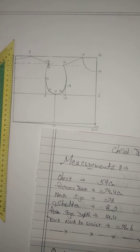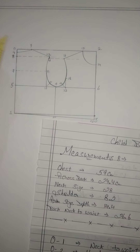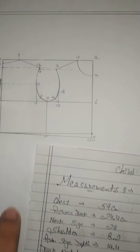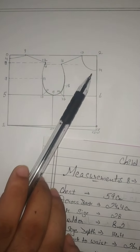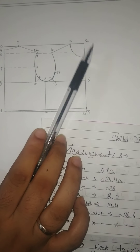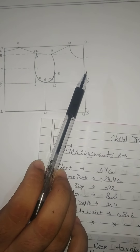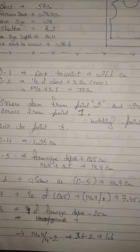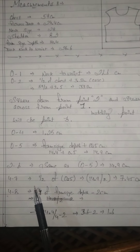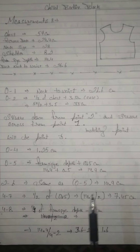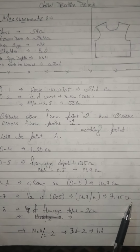From point number 0, mark 14.9 cm. Similarly, 2 to 6 is also 14.9 cm. Join 5 and 6 with a straight line. So 0 to 2 is your nape line, 5 to 6 is the chest or bust line, and 1 to 3 is the hem line or waist line. Then 4 to 7 is half of your 0 to 5 measurement: 14.9 divided by 2 equals 7.45 cm.